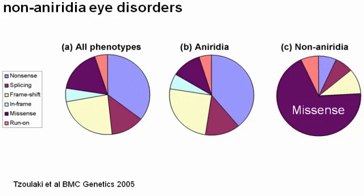Stepping back to our diagrams from the BMC genetics review, we see that aniridia — paying attention to the pie diagram in B — is most often caused by nonsense mutations, frame-shifting mutations that also give rise to a break in the coding sequence, and splicing mutations. We also find a fair number of run-on mutations, and we'll get to those in just a second.